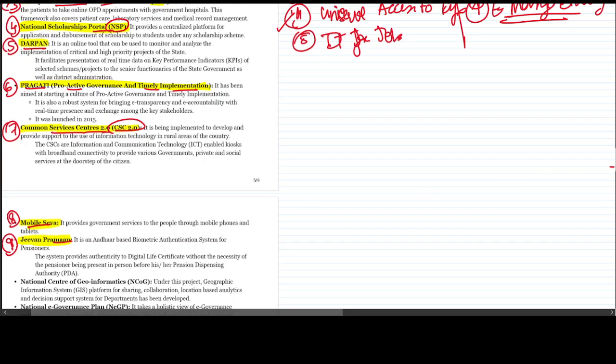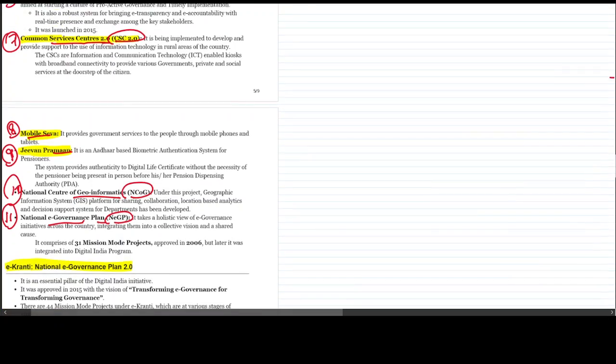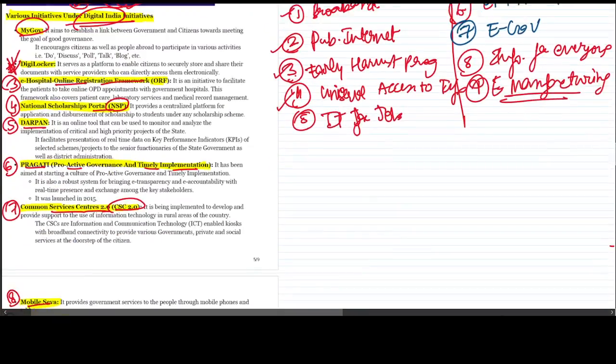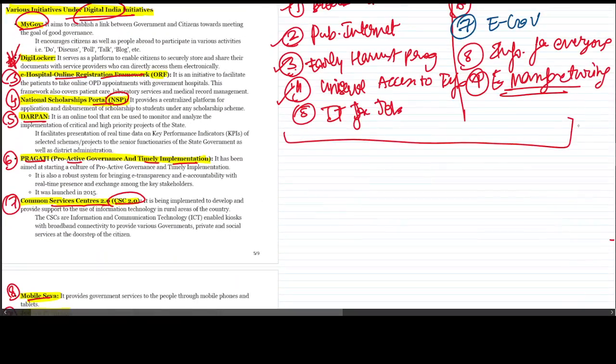There are more things also. Tenth is National Center for Geoinformatics NCOG, and eleventh is National E-Governance Plan NEGP. We'll start from the eleventh. Eleven things are defined under Digital India.